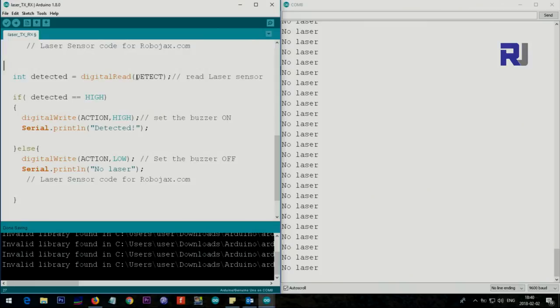Pin two, this is as if I type two, so the result will be stored in the integer variable called detected. Here we say if detected is equal high, so when the laser beam is detected, this value will be high. Then we say digital write action, which is pin eight high, so this sets the buzzer on or whatever else you want to do, and it prints the text detected.